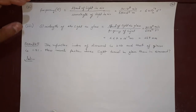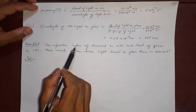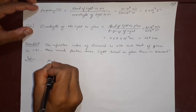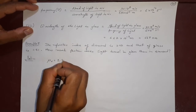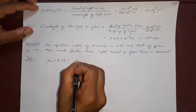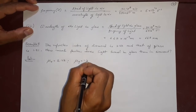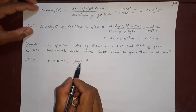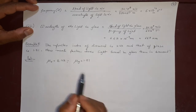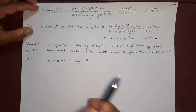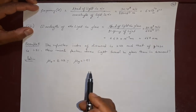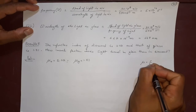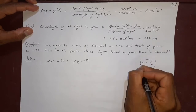Now for the last example: the refractive index of diamond μ_d is 2.47, and the refractive index of glass μ_g is 1.51. We need to find the speed of light in each medium and compare. The formula connecting refractive index and speed is μ = c/v.